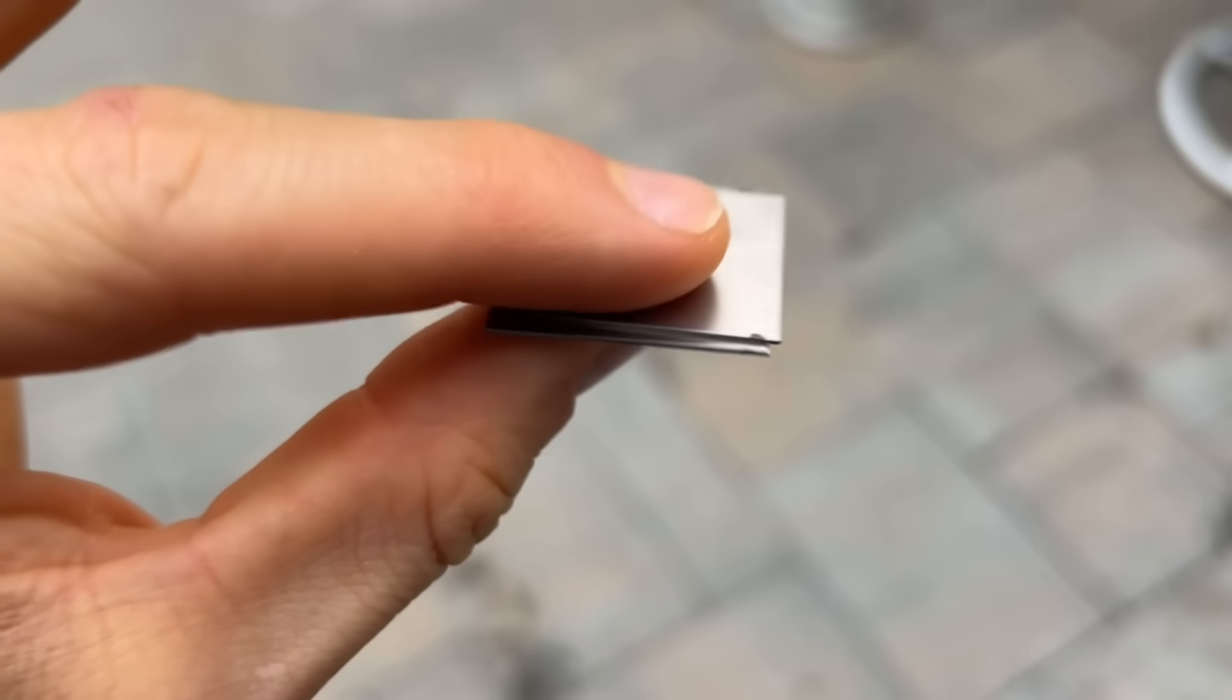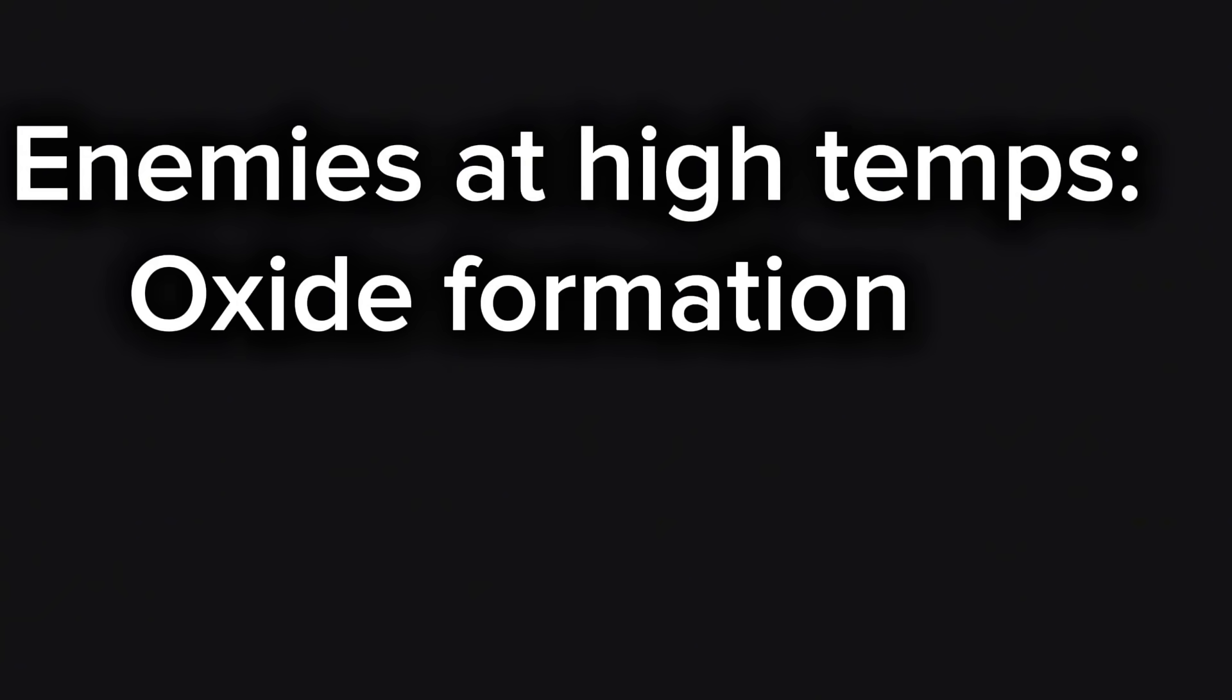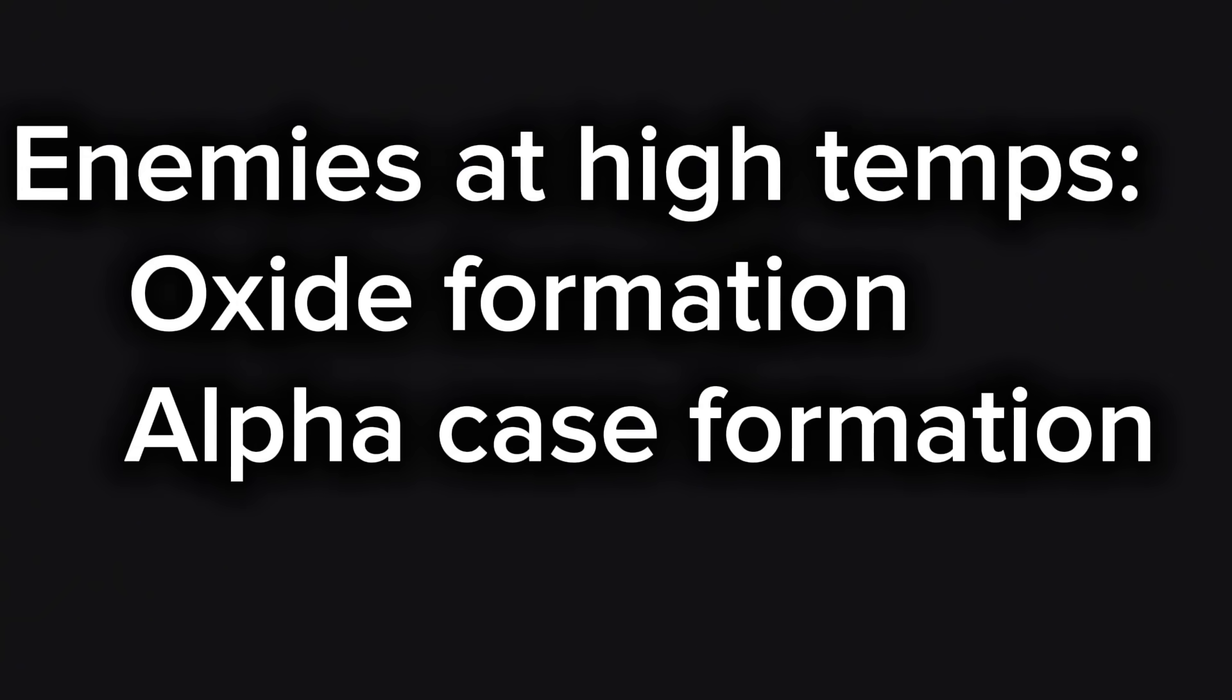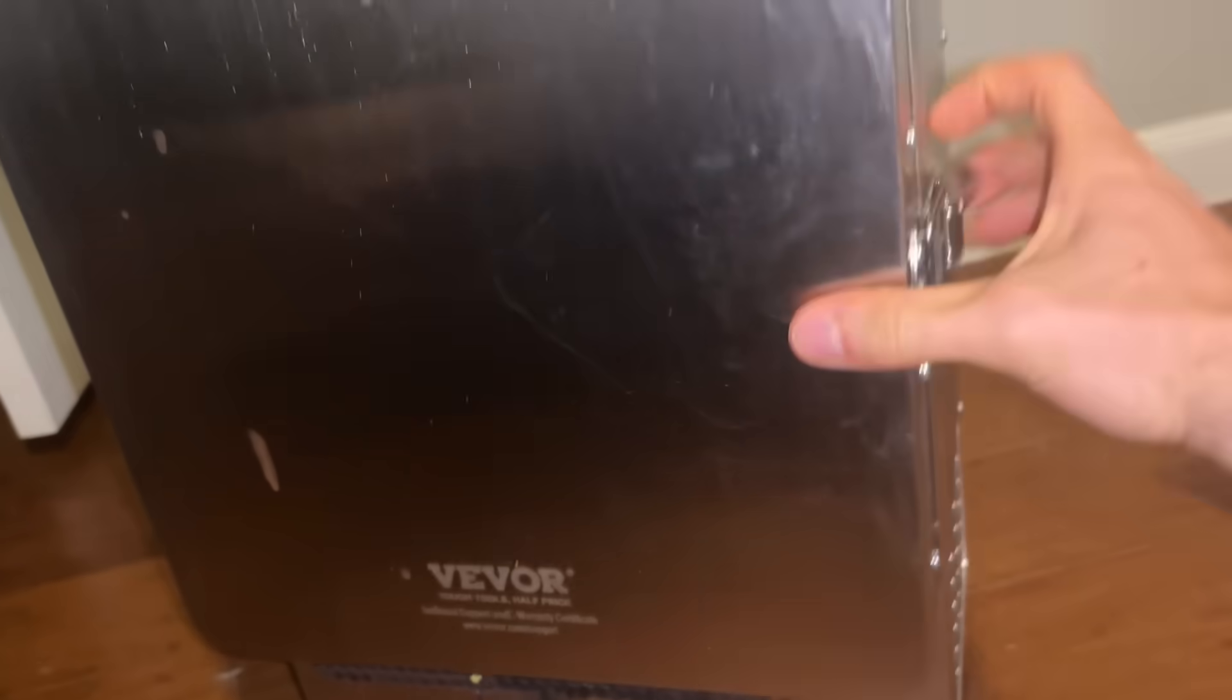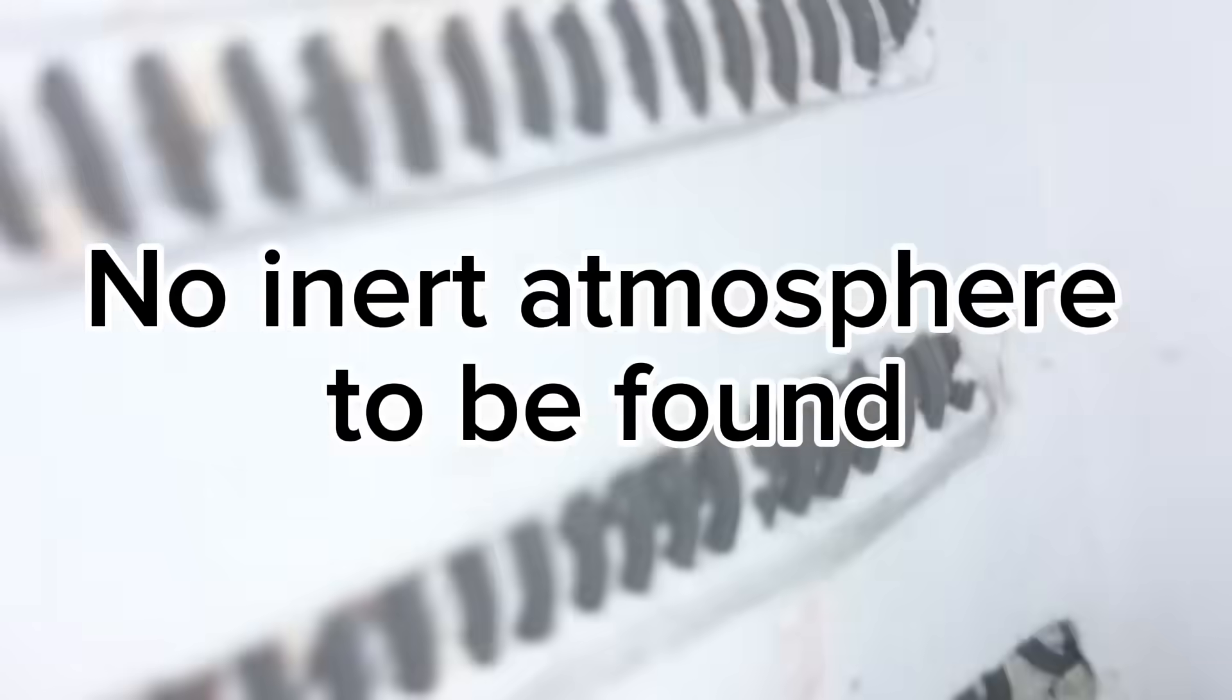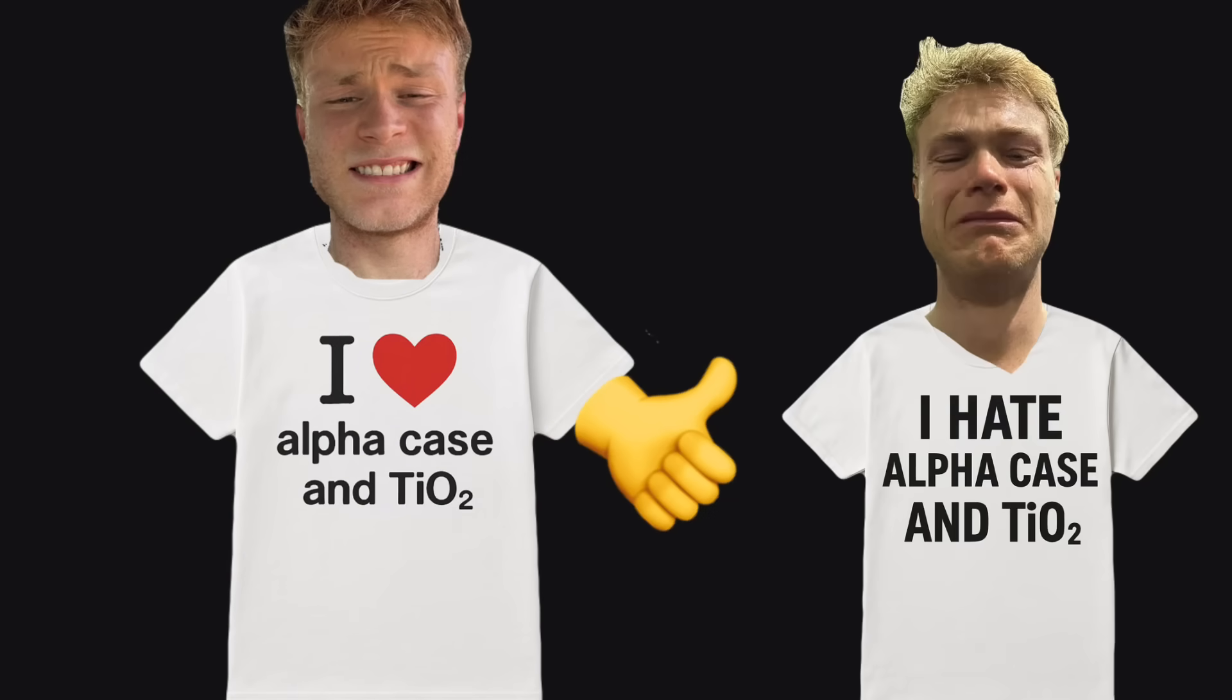So, if I don't have an inert atmosphere, I'm going to be working against two things. The oxide formation, as well as alpha-case formation. So, if I want to make a layered titanium with my lack of supplies, I have to adjust my approach to deal with those two things rather than eliminate them.